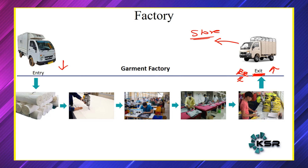You get the raw materials from outside, maybe from a different company. Once it gets into the garment factory, it goes through multiple processes: raw material, cutting, stitching, arranging, pressing, and then packing. Once it is packed, you can never expect to buy it near the gate — not possible. You have to buy from the store only. It will be transported to the store.